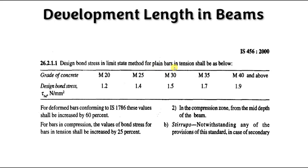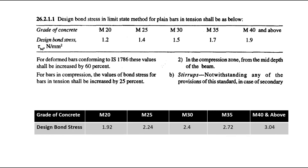The table gives design bond stress in the limit state method for plain bars in tension, with values for different grades of concrete. For deformed bars, these values shall be increased by 60 percent. For bars in compression, the bond stress values for bars in tension shall be increased by 25 percent; and for deformed bars in compression, the values are further increased by 60 percent.